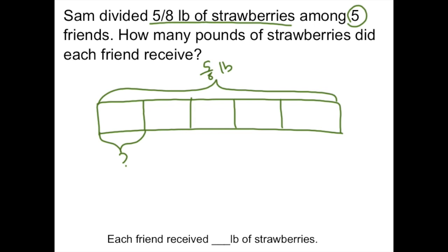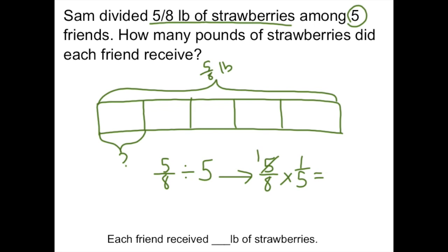To solve this, we're going to take our whole amount, which is five-eighths, and divide that by five. We're going to rewrite it as five-eighths times one-fifth. We cross-cancel and get one-eighth. So each friend received one-eighth pound of strawberries.